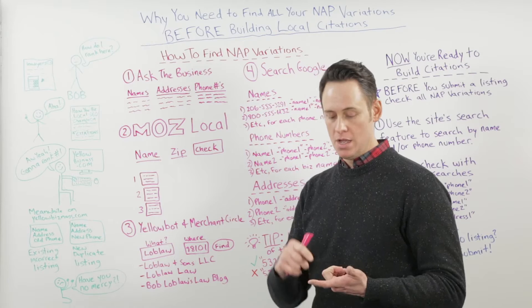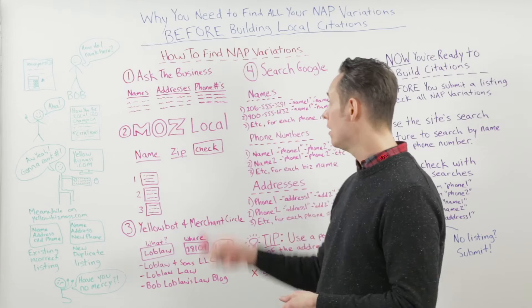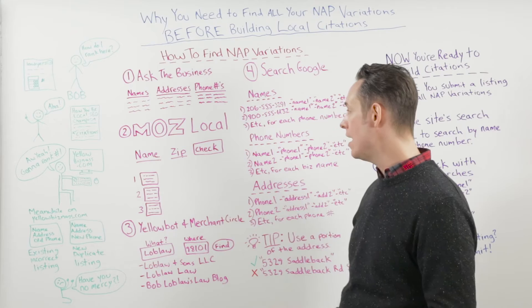We solve this problem in our WhiteSpark citation services with a four-step process to find all the different NAP variations. Step one: we ask the business about any previous business names they've had — if they've changed their name, or if it's a corporate account. Also any addresses — have they moved locations, do they have secondary locations, is the business registered at a corporate address? And phone numbers — any call tracking numbers, toll-free numbers, cell numbers, or past numbers used for the business.